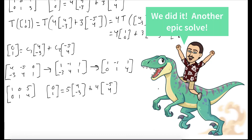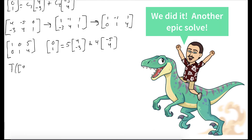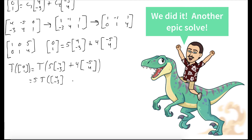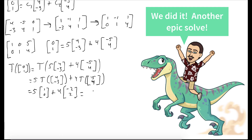As before, we evaluate the transformation on both sides of this equation. Since T is still a linear function, we can break apart the summation and pull out the scalars. We get 5 times (1, 0) plus 4 times (-2, 2), which equals (-3, 8).